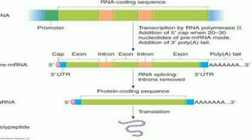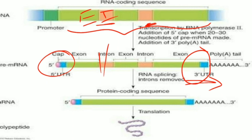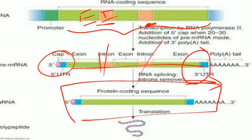In the picture you can see the RNA consists of both exons and introns. A cap is added at the 5' end and a poly-A tail is produced at the 3' end. The introns are chopped off and the exons are spliced together to form the mature mRNA.